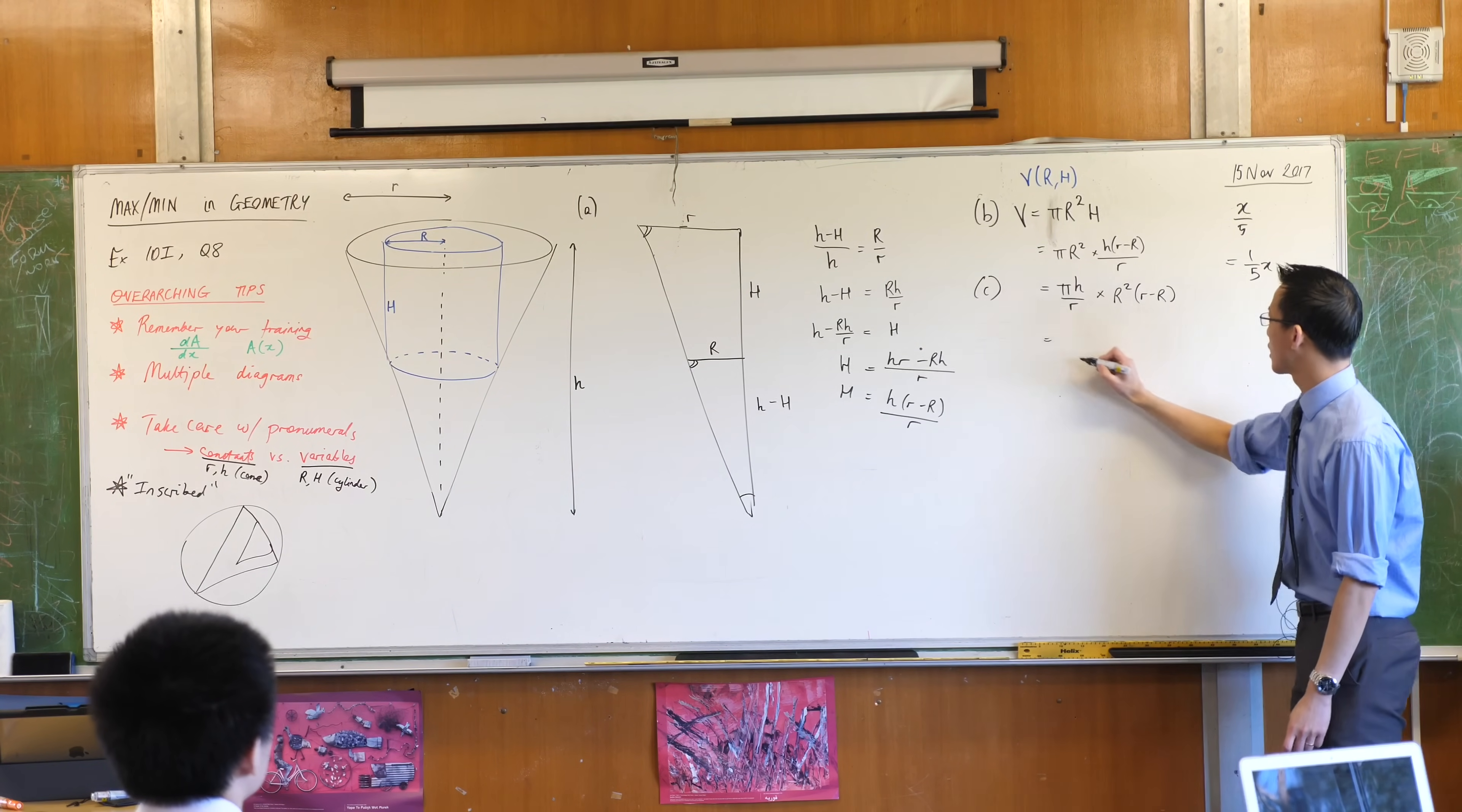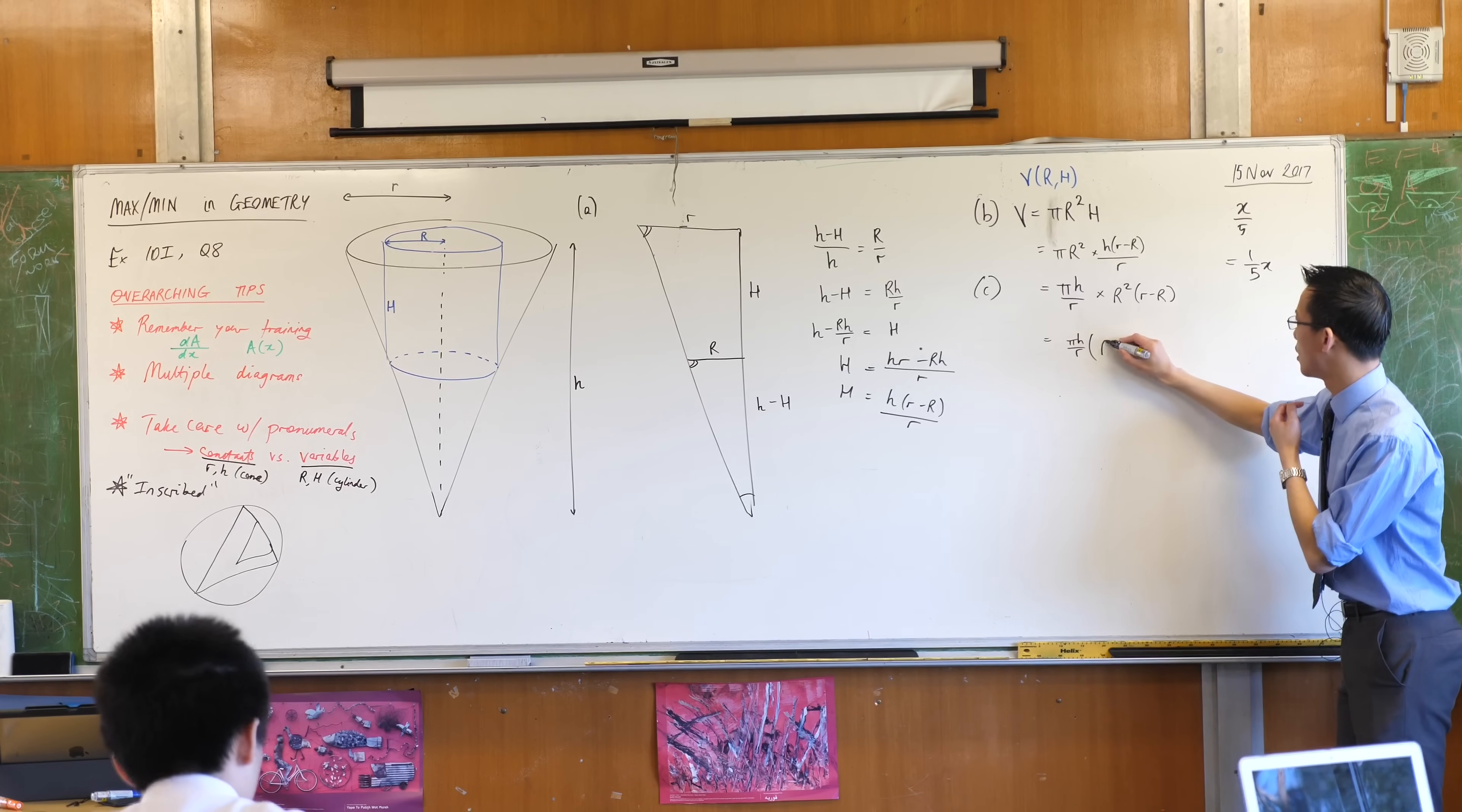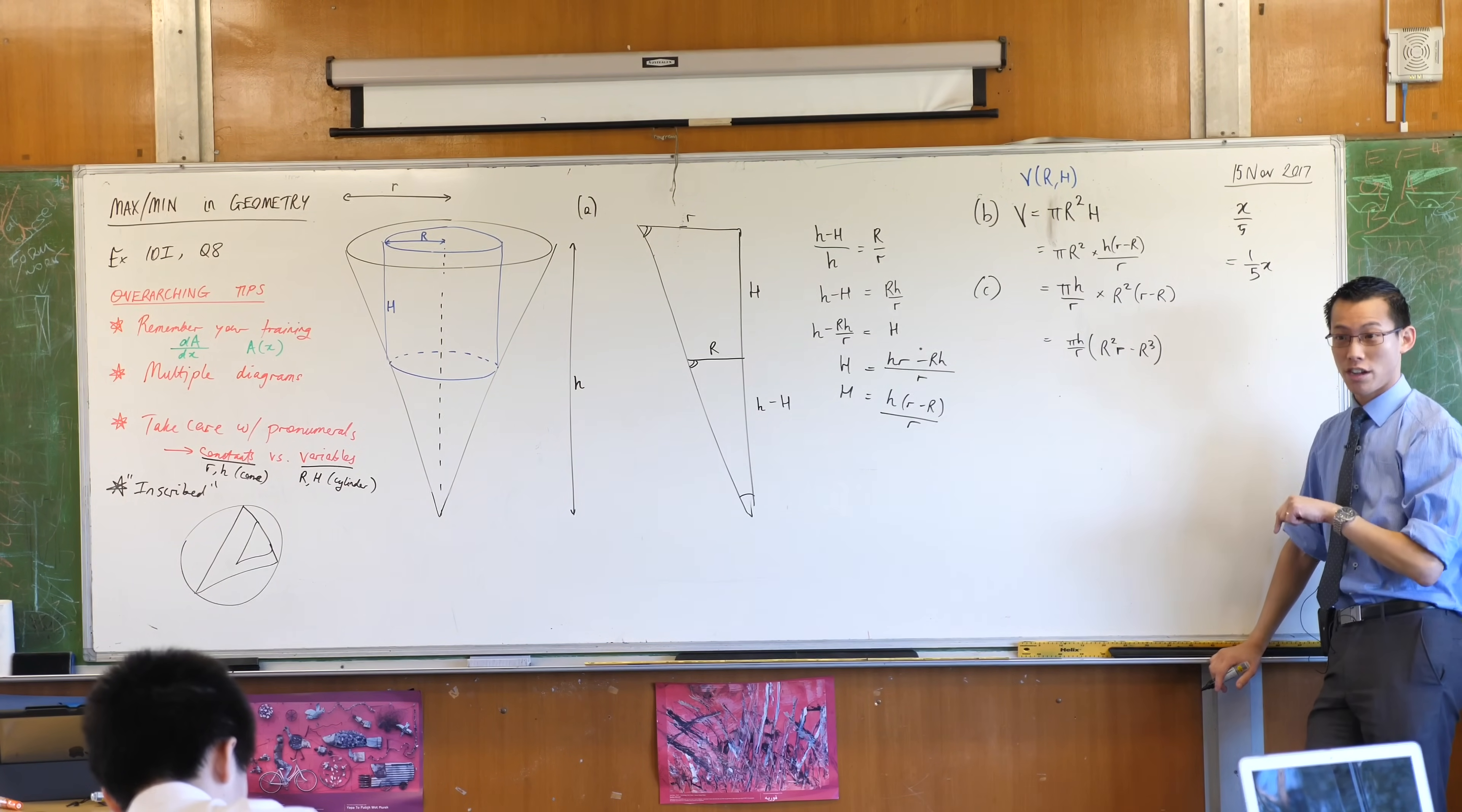But that's okay. I can simplify this as well. I can say, this is pi h on r outside of r squared, r minus r cubed. Did I expand correct? Does it look okay? All right, now I'm ready to differentiate.